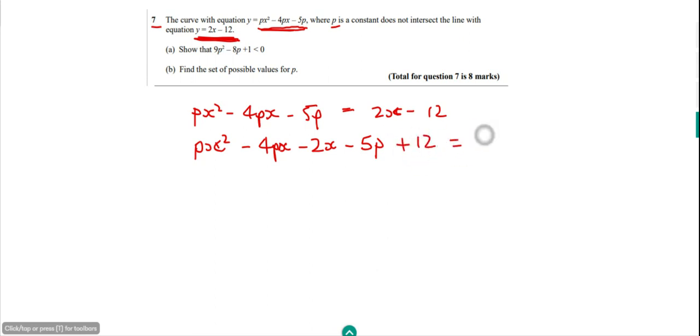And that's equal to zero. I'm just going to combine some of the coefficients here. So we've got PX squared. And then if we look at the coefficient for the X, it's actually minus 4P plus 2. So what I've done there is I've just factorized this X part of it. And then finally, we've got this minus 5P plus 12.